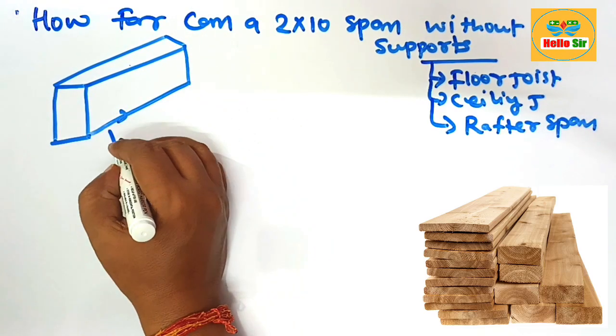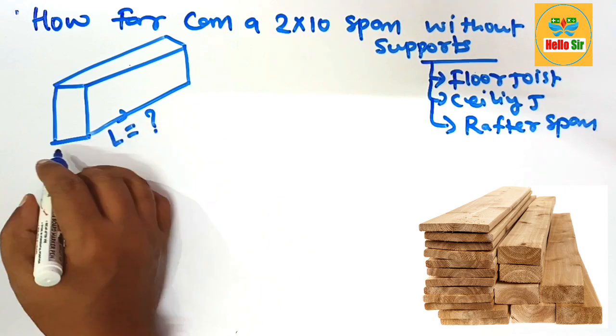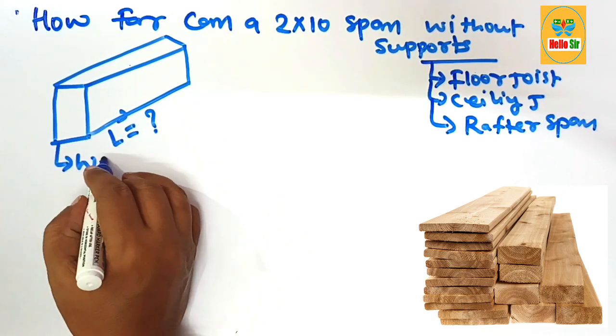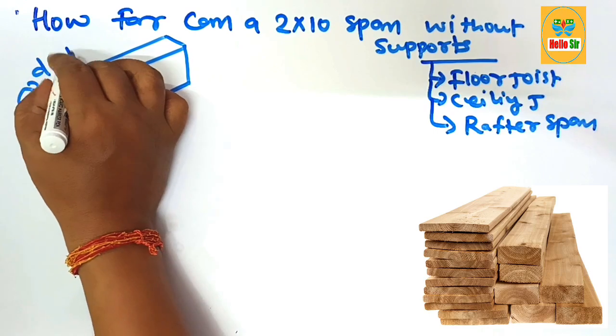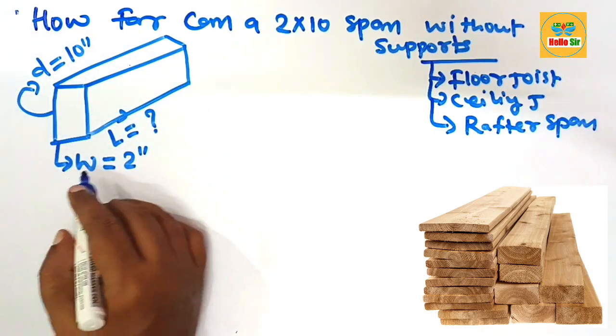This is the length of the span you have to figure out, and this is the width section, that is 2 inches, and this is the depth section of lumber, that is 10 inches. These are the dimensions for the lumber.